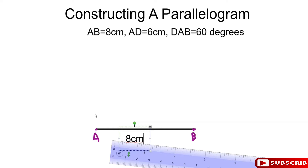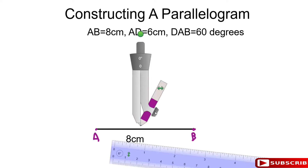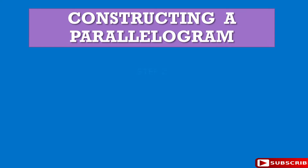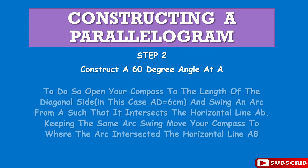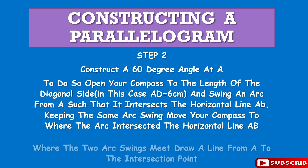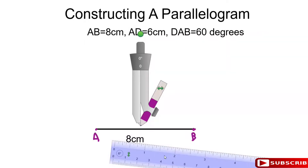Now that we have AB at 8 cm, the next thing is the angle at A is 60 degrees. So we're going to take out our compass and construct a 60-degree angle. To construct a 60-degree angle, first measure the swing you're going to use and make sure it is 6 cm.